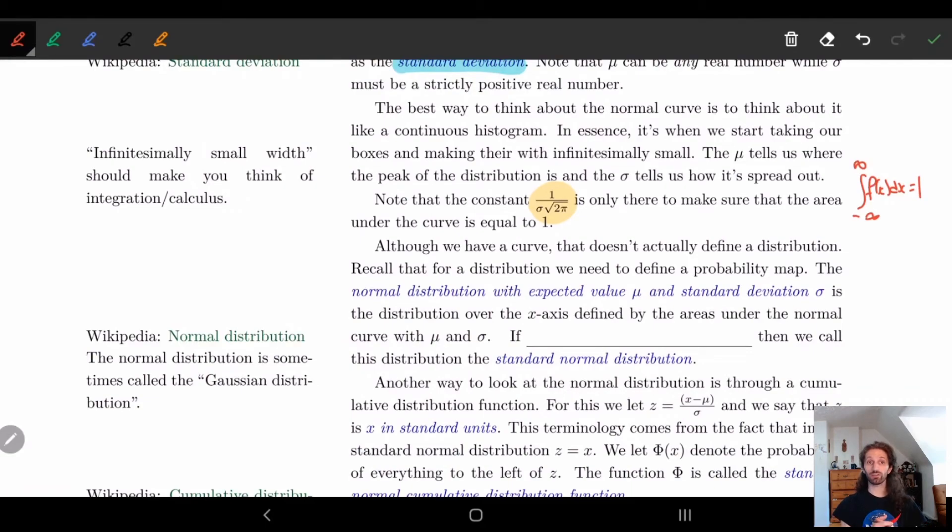So although we have a curve, this isn't necessarily going to define a distribution right away. Because if you think about it, if I take any point, and I look at its height, well, the width is zero, because it's infinitesimally small. So I don't really have a distribution at any given point.